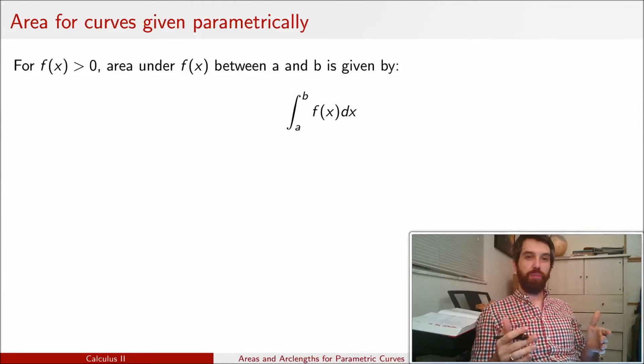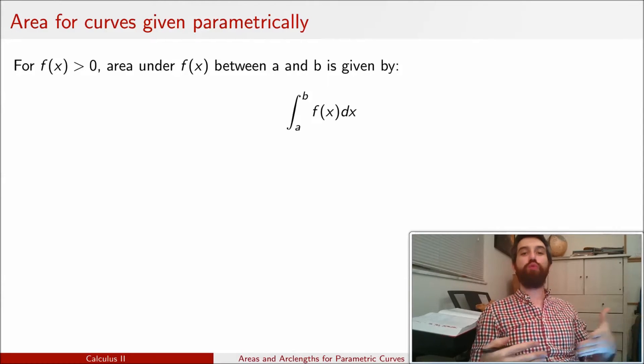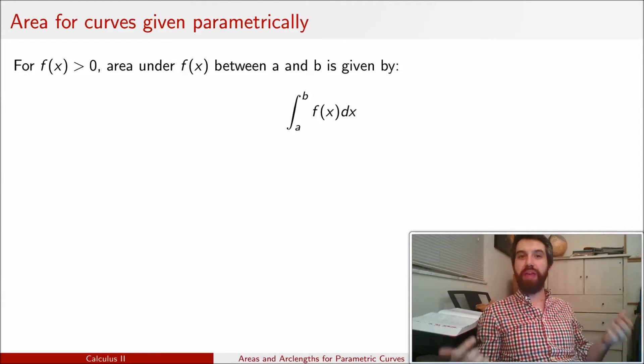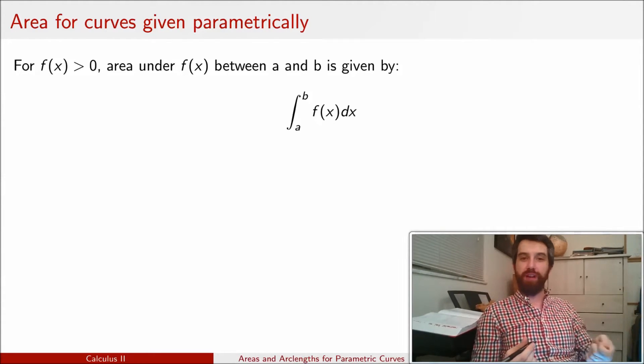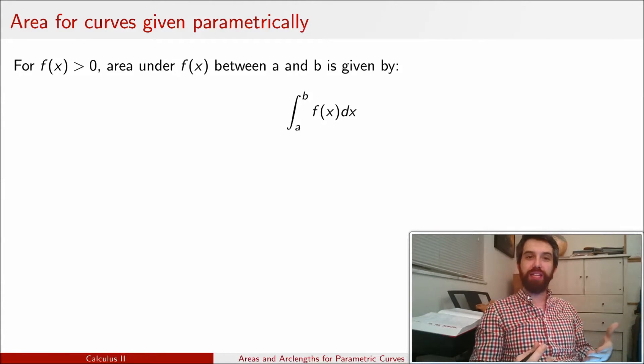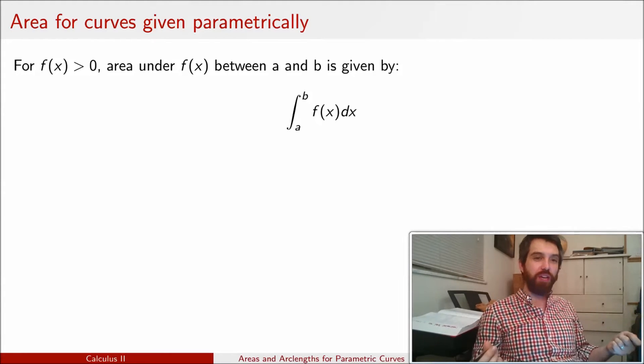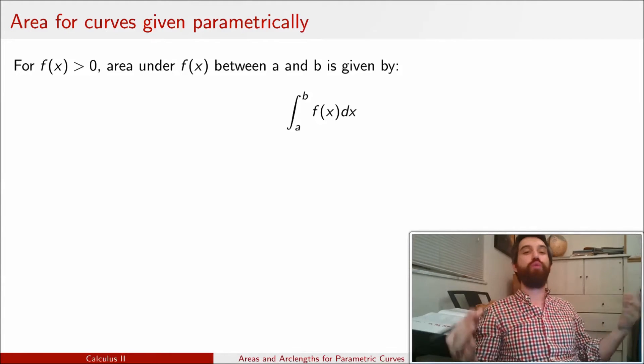We've seen how we can use parametric descriptions of curves to describe a much wider category of curves than we ever could with the graph of a function. The graph of a function required that it had to pass the vertical line test, but a curve that is described parametrically could be a circle or all sorts of weird squiggly things that we might be interested in understanding.